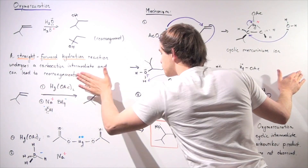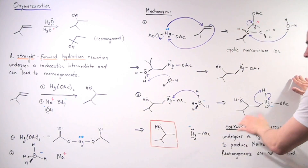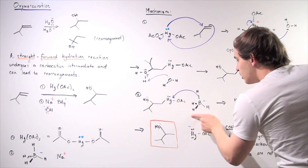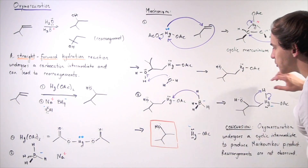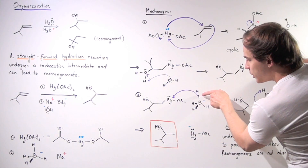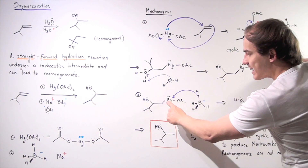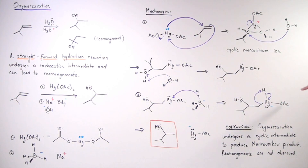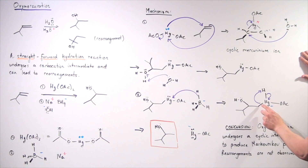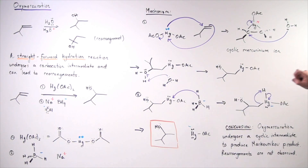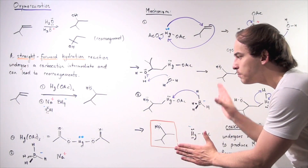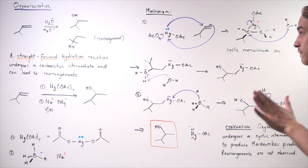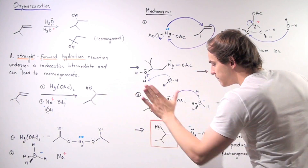In the second overall step, a different mechanism takes place. The NaBH4 anion acts as a reducing agent, using its lone pair of electrons to attack the mercury atom, forming an intermediate with a negative charge on mercury. Then, the electrons in that bond attack a hydrogen, which is taken away while simultaneously displacing the electrons in the carbon-mercury bond, forming the final Markovnikov alcohol product of the entire oxymercuration reaction.